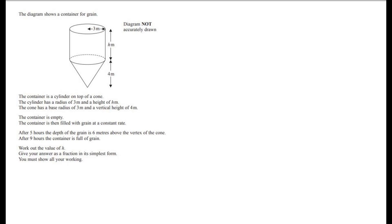Work out the value of h. We start by noting that after 5 hours the depth of the grain is 6 metres above the vertex of the cone. Since the height of the cone is 4 metres, this means that the cone must be completely filled with grain and the grain in the cylinder must have a depth of 2 metres. So we can use this to calculate the volume of grain after 5 hours.